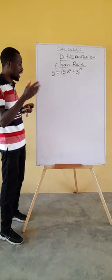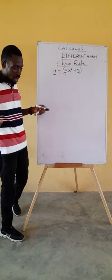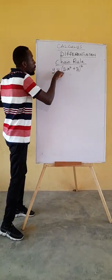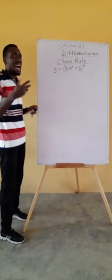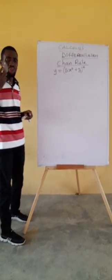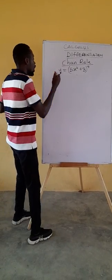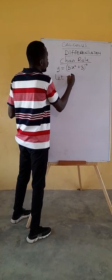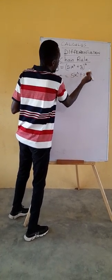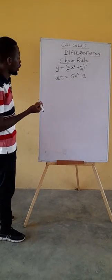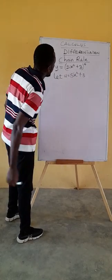And what does that chain rule mean? Chain rule simply means, let a variable, any variable, equal to the base. However, people always use a variable u. So let us also use u. Let u equal to the base, the base is 5x^2 + 4x + 3. So we let u equal to that.